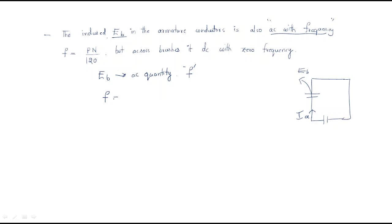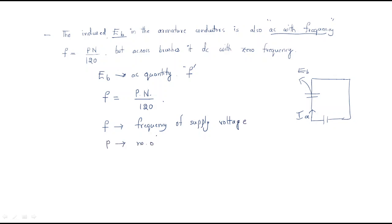The frequency of the back EMF is given by f = P·n / 120, where P is the number of poles of the machine and n is the speed of the machine in RPM (rotations per minute).